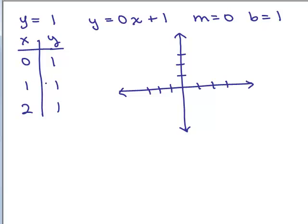If I plotted these three ordered pairs: (0, 1), (1, 1), and (2, 1), notice I'm going to get that horizontal line.